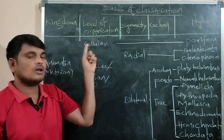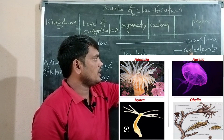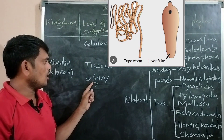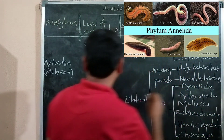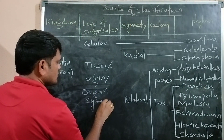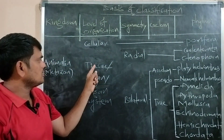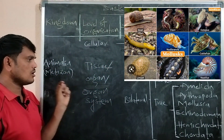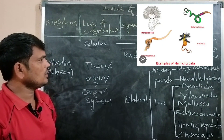Coelenterata and Ctenophora exhibit tissue level of organization. Platyhelminthes exhibit organ level of organization. From Nematoda to Chordata, organisms exhibit organ system level of organization. So to summarize: Porifera exhibits cellular level, Coelenterata and Ctenophora exhibit tissue level, and from Platyhelminthes onward it is organ or organ system level.